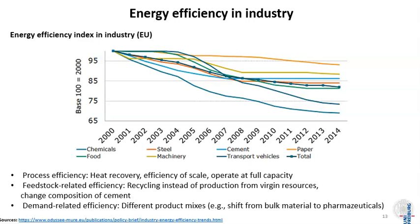This is basically the result of combining different measures: process efficiency in material production and manufacturing processes like heat recovery; efficiency of scale, like using larger facilities or operating at full capacity to reduce idle time; feedstock-related efficiency, for example using recycled paper or recycled steel instead of primary steel, which can bring down energy consumption a lot. It is also quite important to change the composition of cement using different minerals or waste products, which can also bring down energy intensity in this major industry.